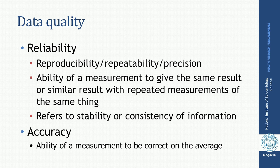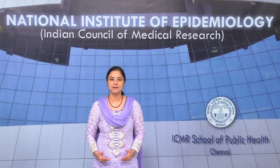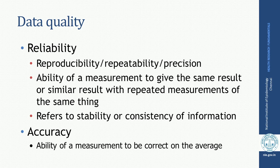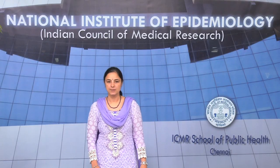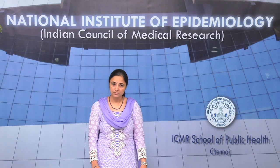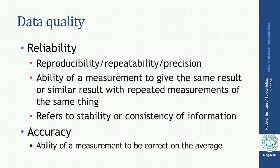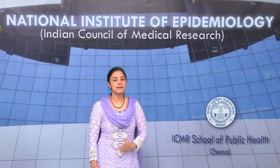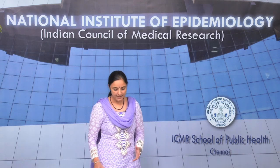The first principle is reliability, which means your study should have repeatability and precision. If the same study is repeated by different investigators, or the same measurement is done at different time points, you should still get more or less similar results. It also refers to stability and consistency of the information. Reliability does not ensure accuracy. Accuracy refers to the ability of a measurement to be correct. Both attributes may or may not occur at the same time.